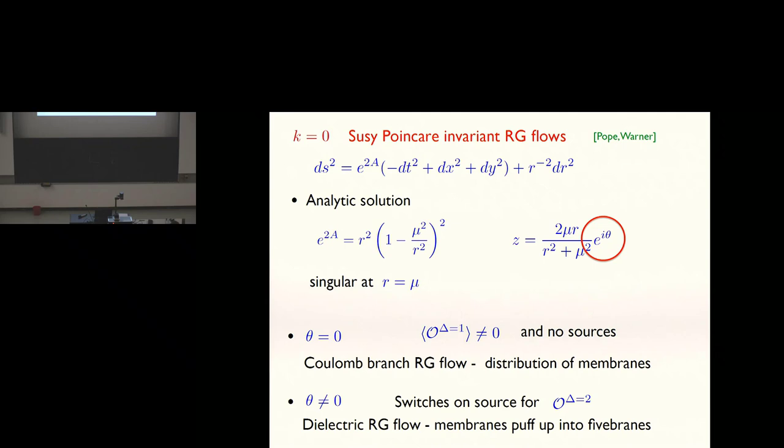Notice that there's a little theta here. Theta is an arbitrary constant. That's a good solution for any value of that theta. That's just the global U(1) symmetry. At the level of four-dimensional solutions, it doesn't do much. But when you uplift to 11 dimensions, it does a lot. If theta equals zero, you find that your solution has a VEV for this delta is one operator and no sources. It just corresponds to a Coulomb branch RG flow. If you switch on theta, you start sourcing the delta is two operator. From a 11-dimensional point of view, some of those membranes are puffing up into five-branes via the dielectric effect. These are the K equals zero RG flows. Just remember that they're understood and that they're singular as R goes to zero.